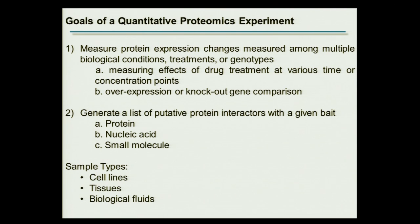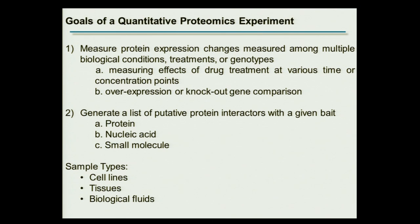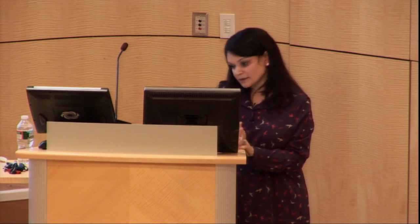We can look at a variety of baits — proteins, RNA, DNA, small molecules — and use quantitative proteomics to look at what is specifically binding to these molecules. We can also work in a variety of sample types: cell lines, tissues, or biological fluids such as urine or plasma.